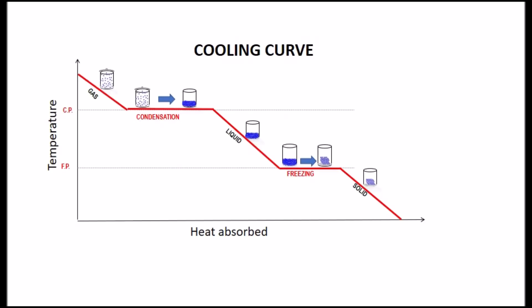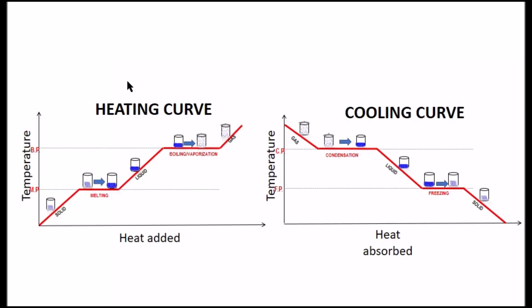The cooling curve will be like a mirror image of the heating curve. Where the freezing point will be in the place that the melting point used to be. And the condensation point will replace the boiling point since they are opposite changes. Here you have a heating curve and a cooling curve back to back. You are going to see that the melting point is at the same level of the freezing point because they have the same value. And the boiling point and the condensing point also have the same value.